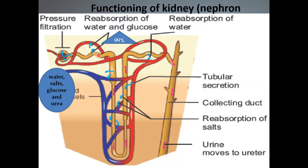The second step is selective reabsorption. In selective reabsorption, 99% of the glomerular filtrate is reabsorbed into the blood capillaries. Those components which are essential to the body are reabsorbed through the processes of osmosis, diffusion, and active transport. Each part of the nephron is involved in selective reabsorption — the loop of Henle and the proximal and distal convoluted tubules. All these structures are totally covered by capillaries and veins.